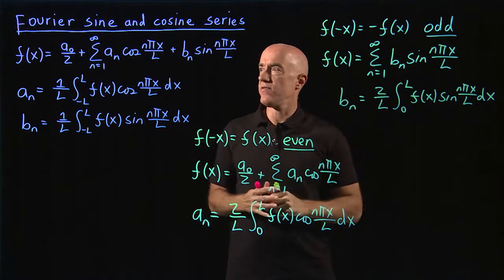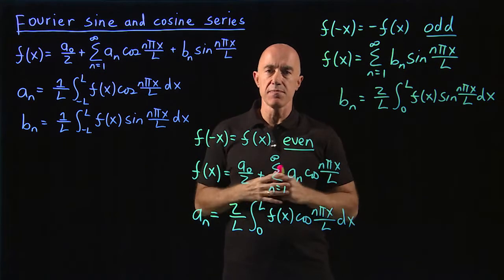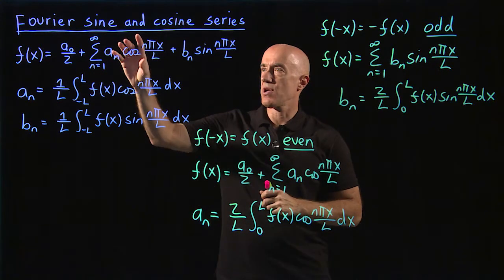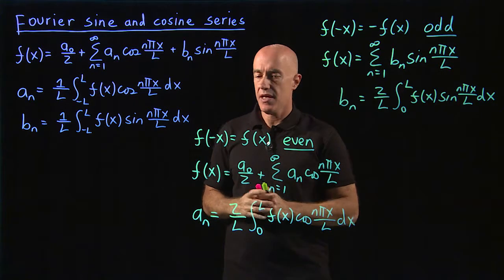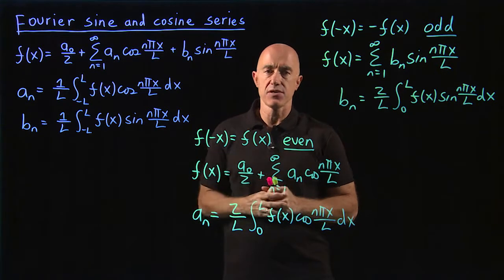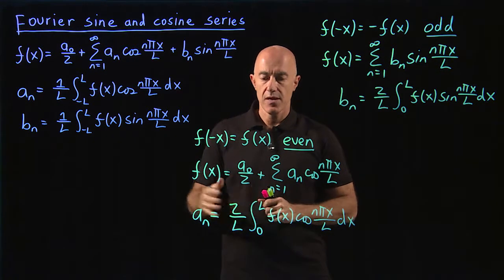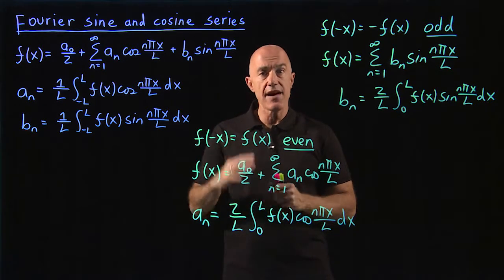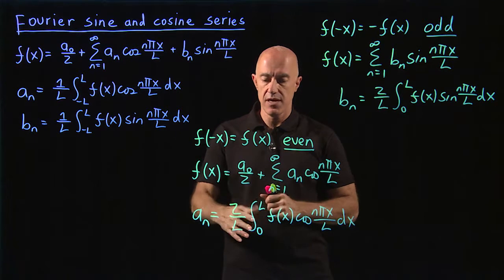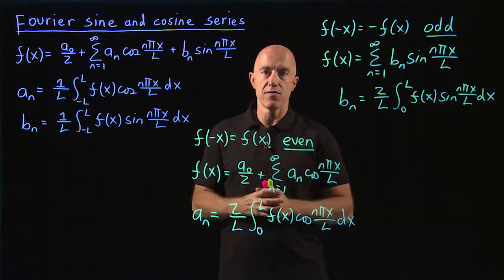So let me review. The general Fourier series sometimes simplifies into a Fourier sine series or a Fourier cosine series. If f is an even function of x, then you get the Fourier cosine series. The only information you need about that function is over half of its periodic interval, here from 0 to L. f is periodic over 2L.